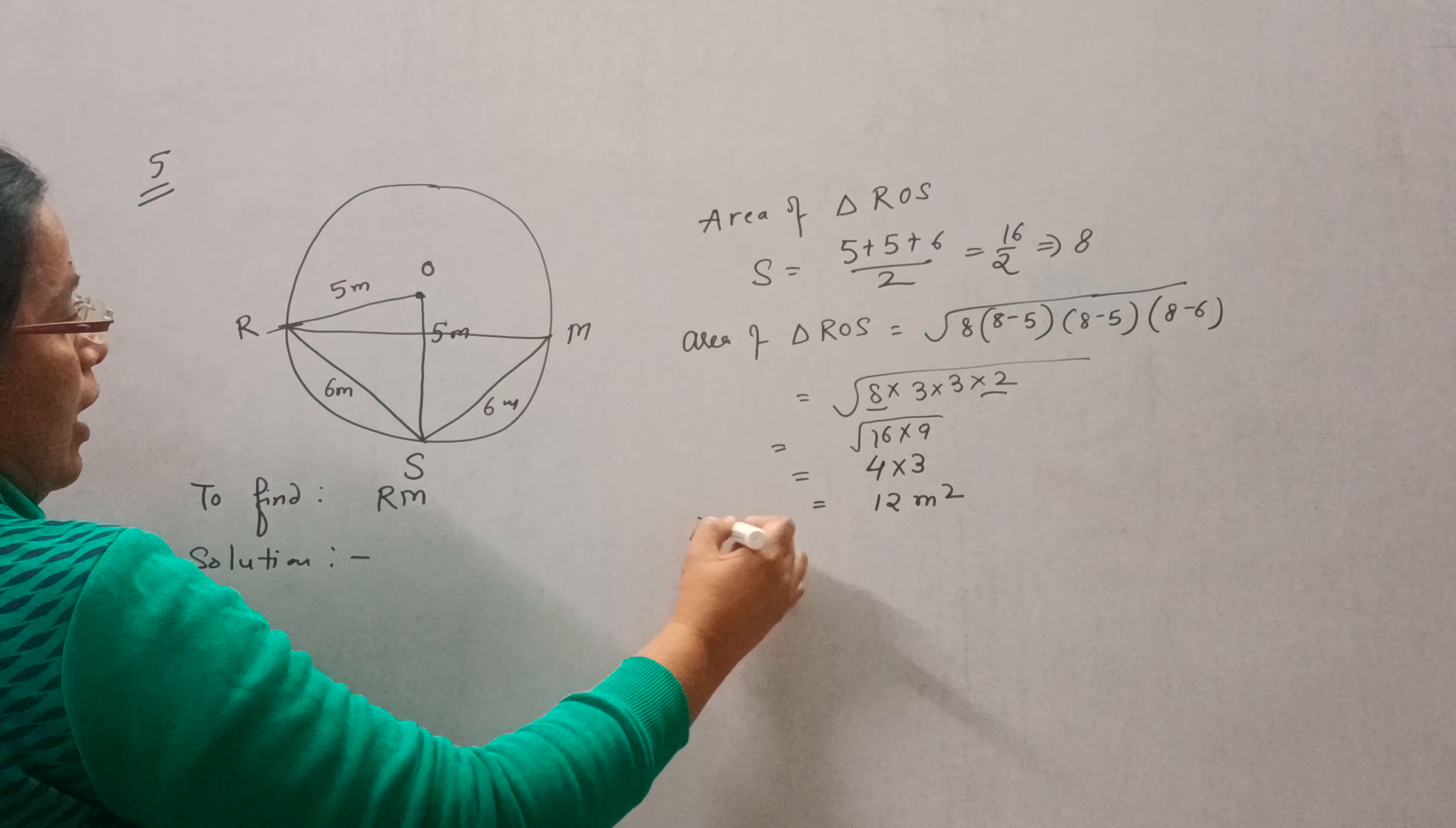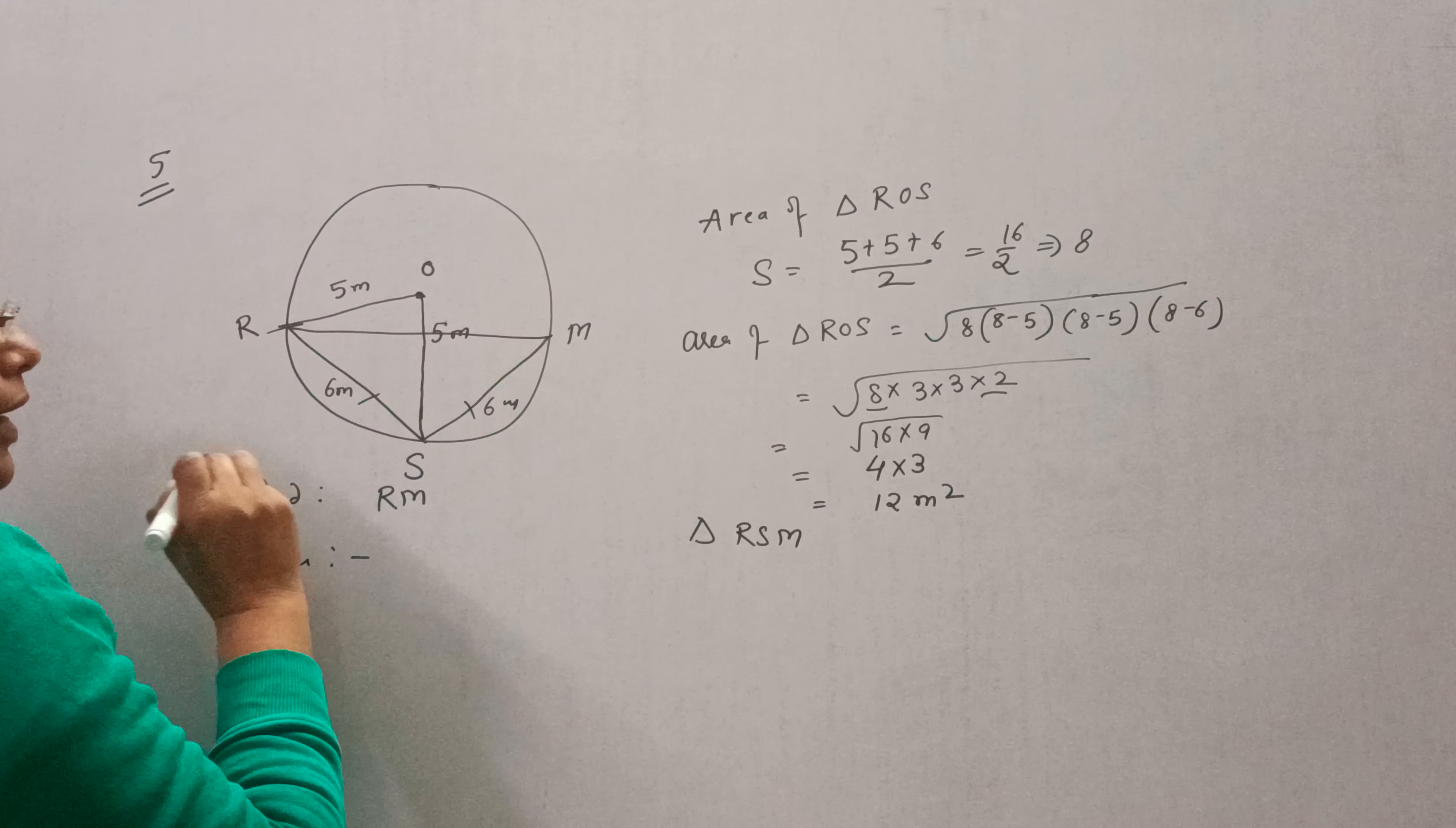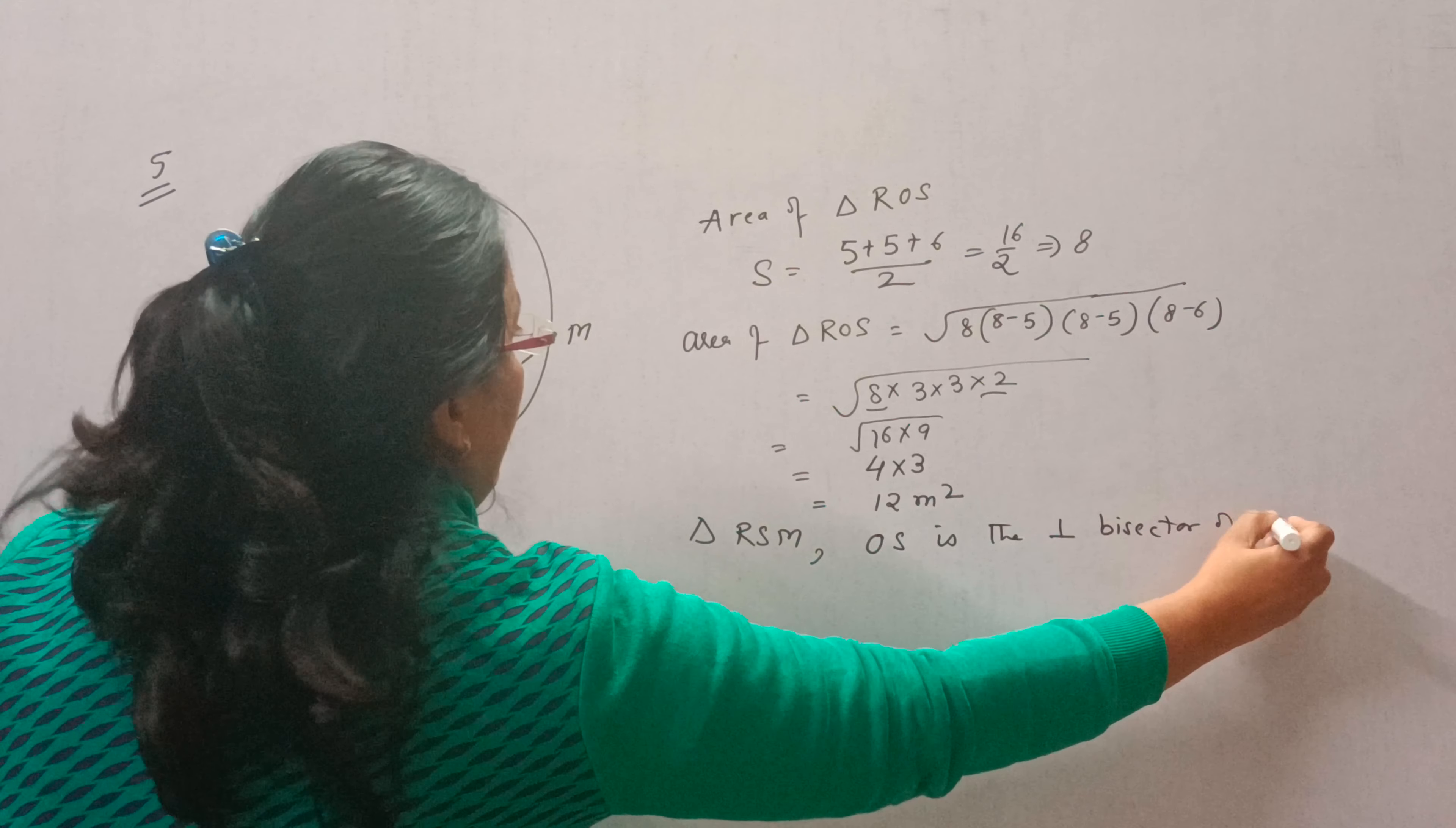Now, triangle RSM is an isosceles triangle and SO passes through the center. So in triangle RSM, OS is the perpendicular bisector of RM.